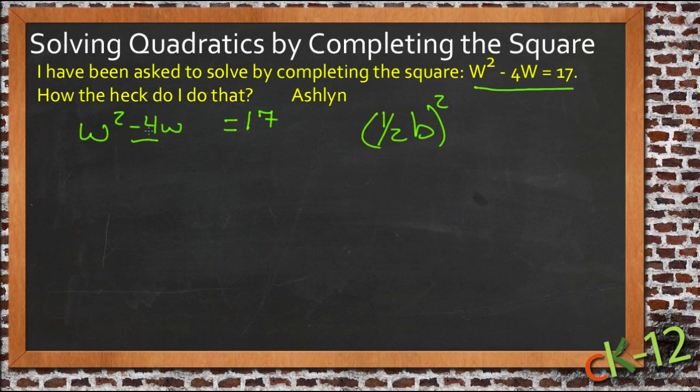So one half of b would be negative 2, and negative 2 squared would be 4. So we want to add that to this side of our equation to complete the square. But now that we've added 4 to this side, we need to add 4 to this side.